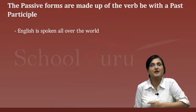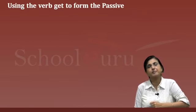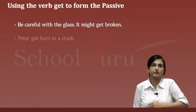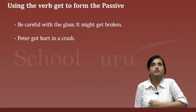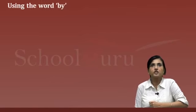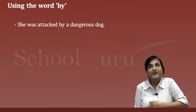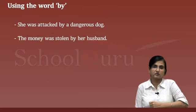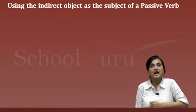We sometimes use the verb 'get' to form the passive. For example: 'Be careful with the glass — it might get broken.' 'Peter got hurt in a crash.' If we want to show the person or thing doing the action, we use 'by': 'She was attacked by a dangerous dog.' 'The money was stolen by her friend.'